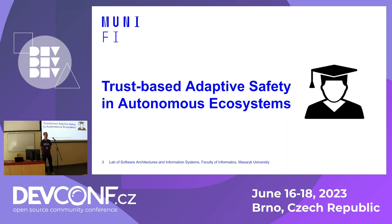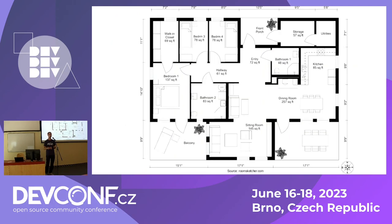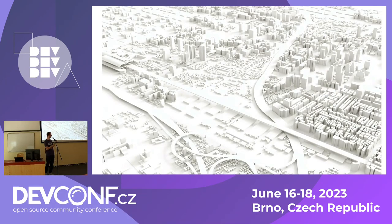My research at the university is about trust-based adaptive safety in autonomous ecosystems. So what are software ecosystems? If we combine multiple systems into one big unit, we can call them systems of systems or ecosystems. It's some kind of evolution as we are creating more and more complex structures, and such systems can provide much more than a single system. An analogy from buildings: a regular house could be a software system, and an ecosystem could be like a city with plans of every individual building inside.